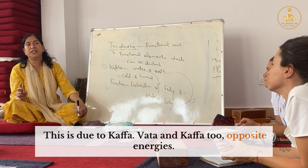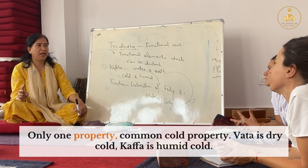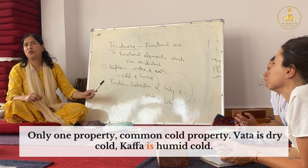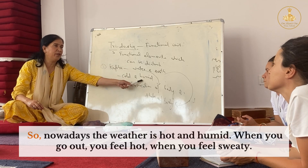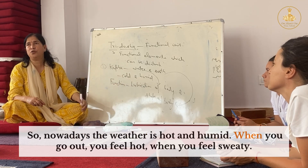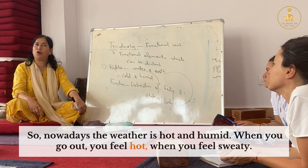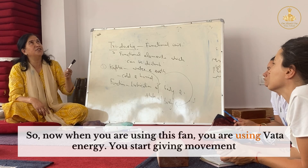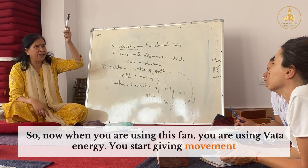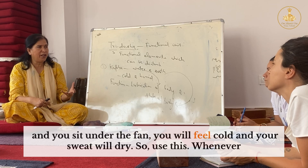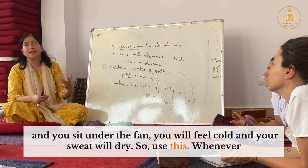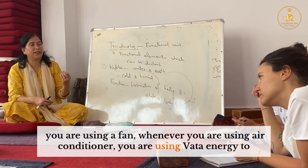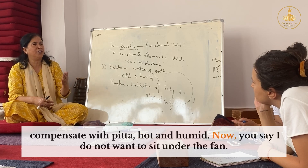Vata and Kapha are two opposite energies, with only one property in common: the cold property. Vata is dry cold, Kapha is humid cold. Nowadays the weather is hot and humid — when you go out, you feel hot and sweaty. So when you use a fan, you are using Vata energy. You give movement, you sit under the fan, you feel cold and your sweat dries. When you use a fan or air conditioner, you are using Vata energy to compensate for the hot and humid Pitta.